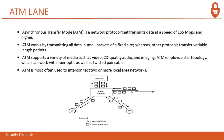Next is ATM Lane — Asynchronous Transfer Mode. ATM is a network protocol that transmits data at a speed of 155 megabits per second and higher. ATM works by transmitting all data in small packets of a fixed size, whereas other protocols transfer variable length packets. ATM supports a variety of media such as video, CD audio, and imaging. ATM employs a star topology and can work with fiber optics as well as twisted pair cables. ATM is most often used to interconnect two or more local area networks.